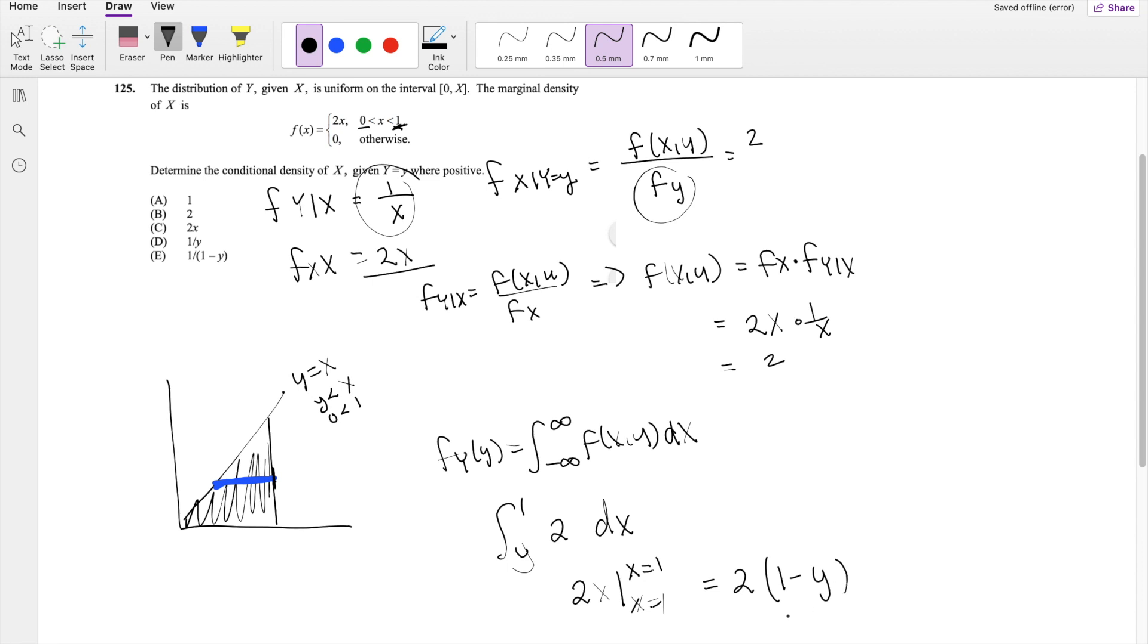This is equal to 2(1 minus y). And that is our marginal distribution, so we're going to put that underneath here. 2 over 2(1 minus y). The 2s cancel out, so you actually end up with 1 over (1 minus y), which is our answer, E.